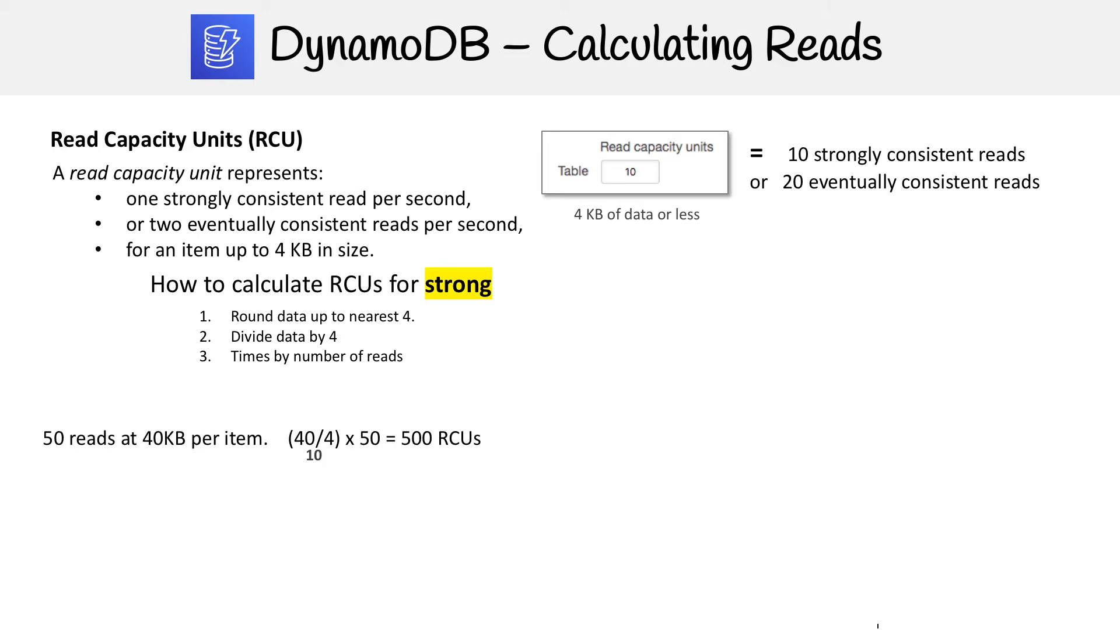So let's go through three examples. The first being 50 reads at 40 kilobytes per item. So we don't need to round it up to four because 40 is already divisible by four. And we're going to divide that by four giving us 10, times that by 50. That's how many reads we have. And that's going to be the number that goes up in here, 500 RCUs.